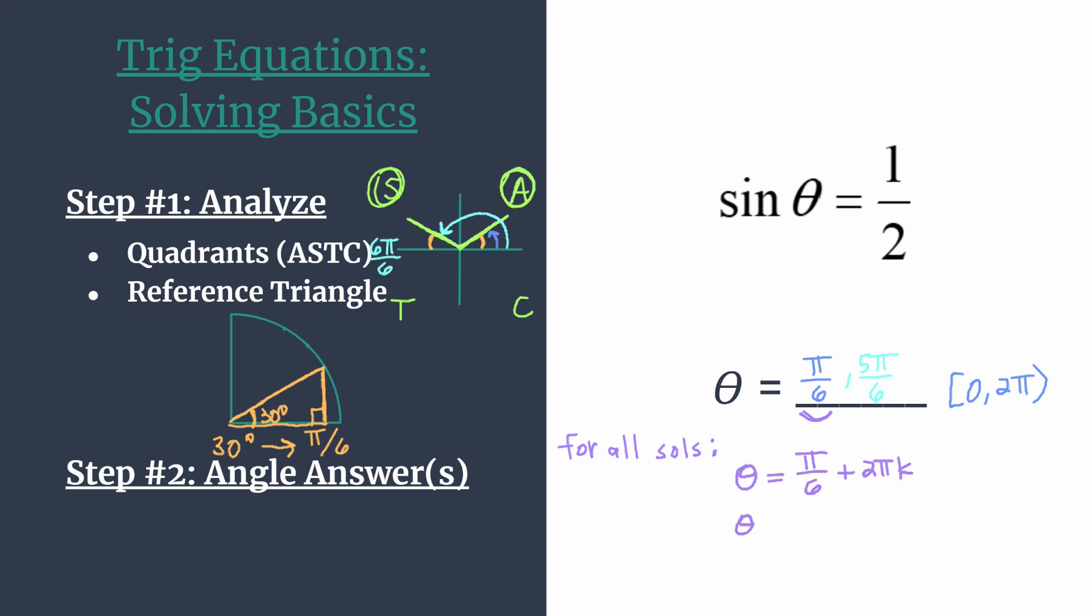And we can do another solution equation for our quadrant two angle. Theta is 5 pi over 6 plus all its coterminal angles plus 2 pi k. And so that'll get all the solutions to this equation.